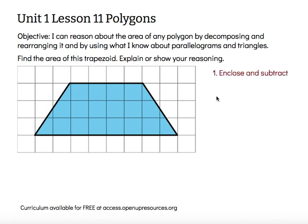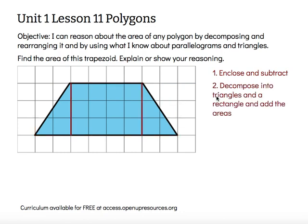One strategy would be to enclose and subtract — I could enclose this trapezoid in a rectangle and then subtract those two triangular pieces that aren't really there. I could also decompose this trapezoid into triangles and a rectangle, and then add the area of each of those parts — the area of the rectangle plus the area of the two triangles.